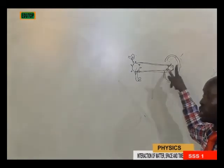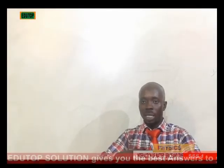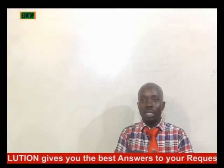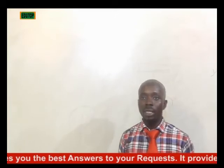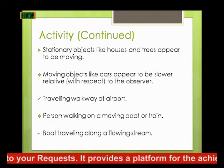The movement of a car jack when changing a tire is an example of relative motion. I also mentioned the swinging stone attached to a rope, and the movement of a mouse being chased — if the mouse is not chasing you, you will not run. So two motions are actually taking place with respect to each other. If one does not move, the second one will not move. Other examples include a moving walkway at the airport.